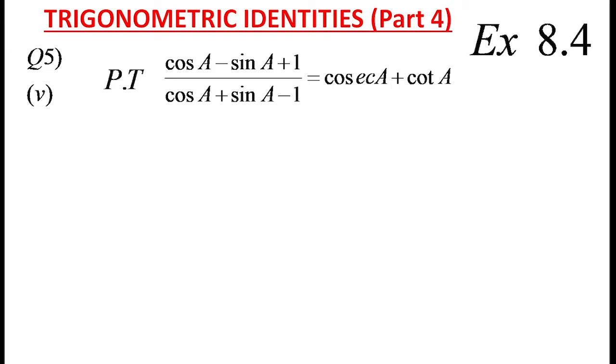See here left side is in the terms of cos and sin but we need the answer in terms of cosec and cot. How will you get cosec and cot from the question? If we divide each and every term with sin A we will get the terms with cosec and cot.